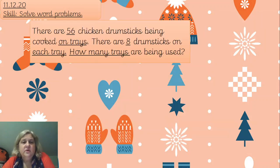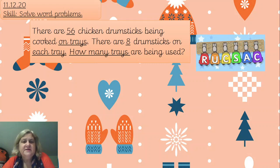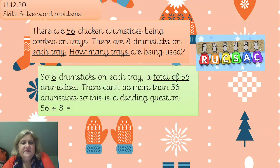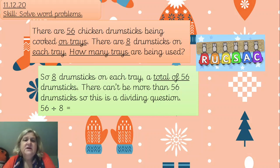Here's a question: there are 56 chicken drumsticks being cooked on trays, and there are eight drumsticks on each tray. How many trays are there? There are 56 drumsticks and only eight on each tray. The most that number sentence could be is 56, so this is a dividing one - we can't have any more chicken drumsticks than 56, so you know this is going to be a division question.